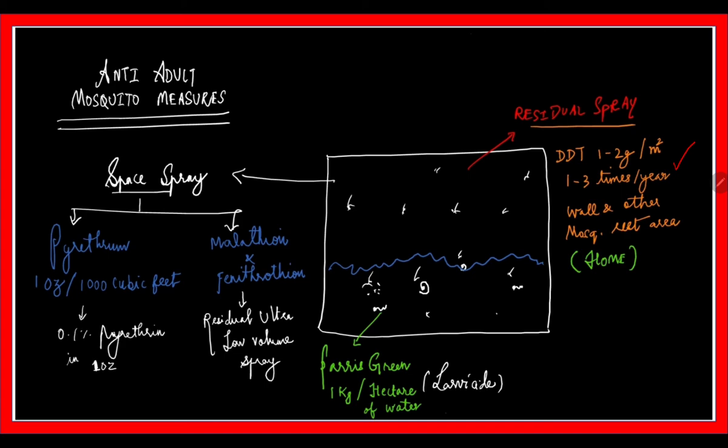For space spraying, the natural insecticide pyrethrin is most effective, at 1 ounce per 1000 cubic feet, containing around 0.1% of the active material pyrethrin. Malathion or fenitrothion is used for residual ultra-low-volume spray and fogging. For larvicide, Paris green is given at a concentration of 1 kg per hectare of water.